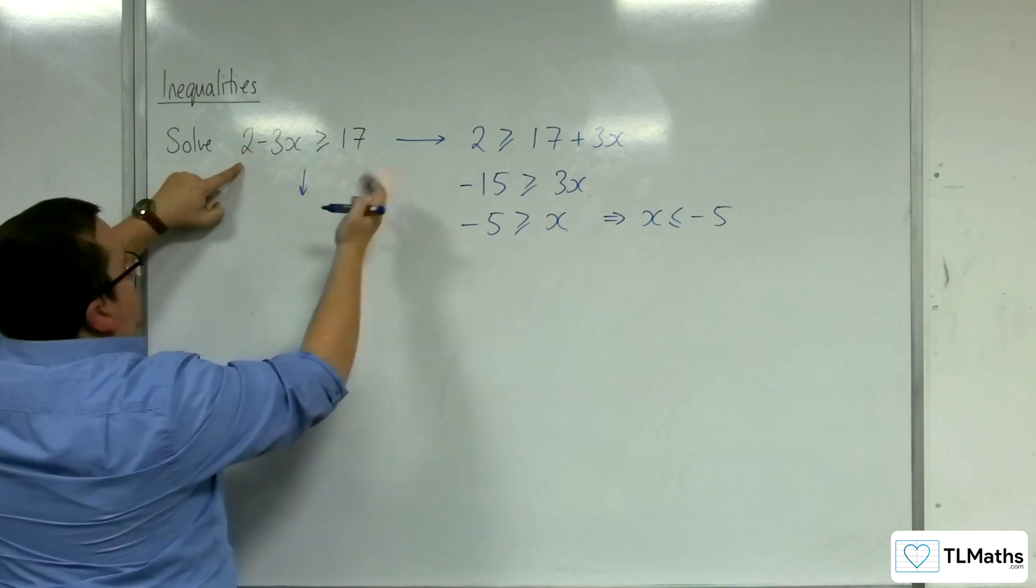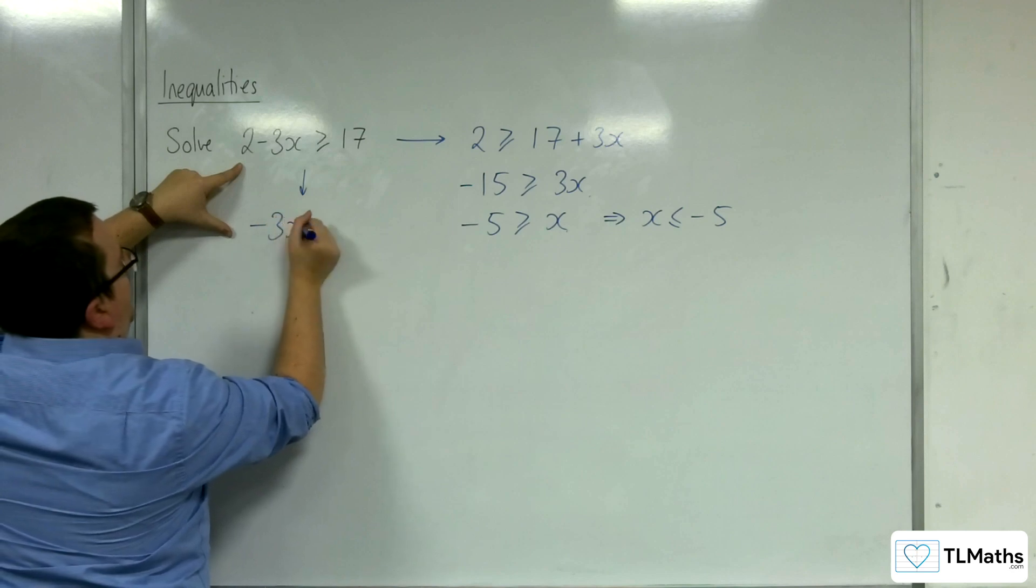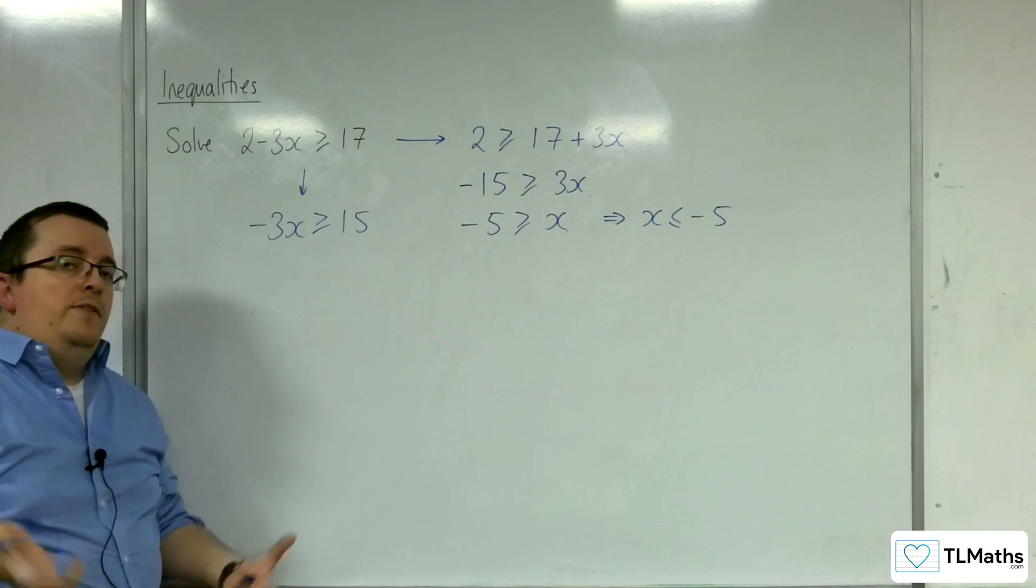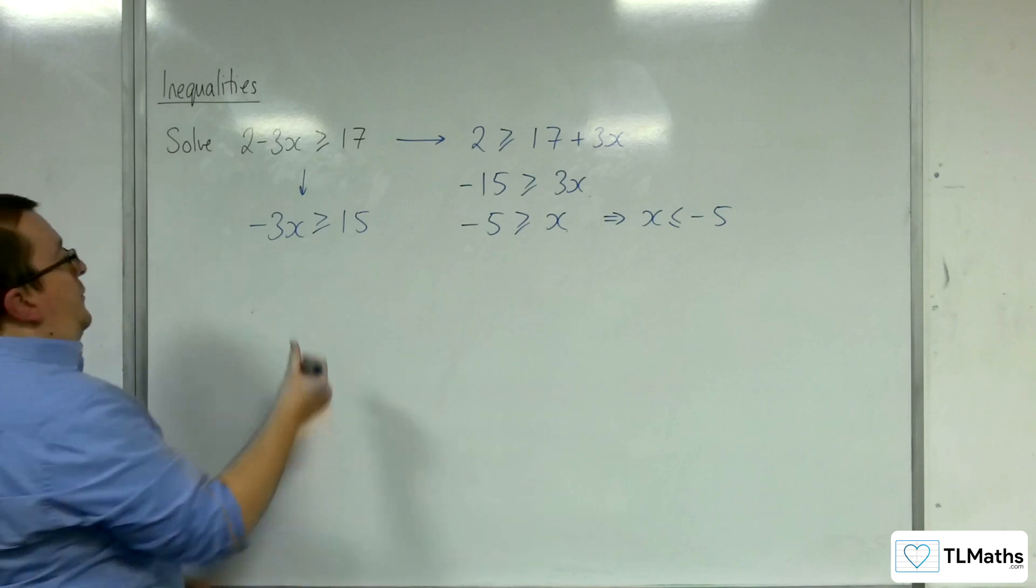If you subtract the 2 from both sides first, we get minus 3x is greater than or equal to 15. Then, just divide through by the minus 3.